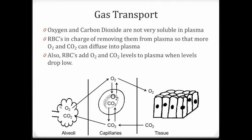With oxygen, if you have a lot of oxygen in the alveoli, the oxygen is going to diffuse from the alveoli into the plasma. Now the plasma can't hold much oxygen, so if we were limited to that, we wouldn't have much oxygen in our blood. But the red blood cell can pick up a lot of that oxygen and store it. As soon as we move oxygen into the red blood cell, more oxygen can diffuse into the plasma. As oxygen diffuses into the plasma, the red blood cell picks it up, and that keeps going until we leave the lungs.